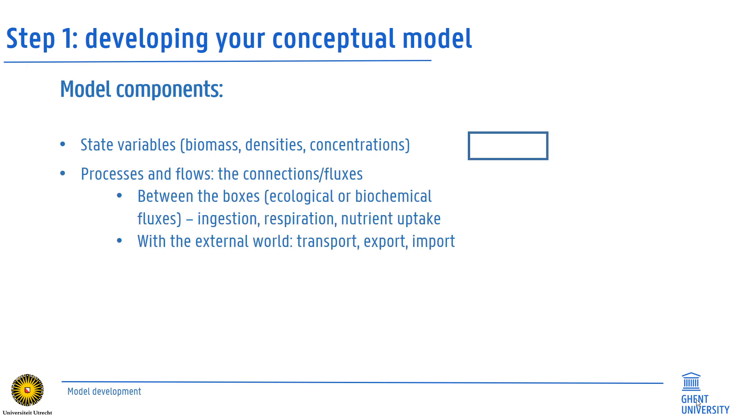Processes that represent fluxes of, for instance, nutrients or individuals between the state variables, the boxes, are depicted by full arrows. Also those fluxes in connection with the external world, like import or export of these nutrients or individuals from and to locations in which they are not explicitly modeled.